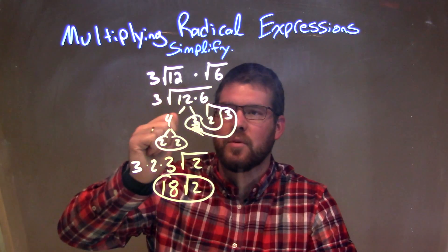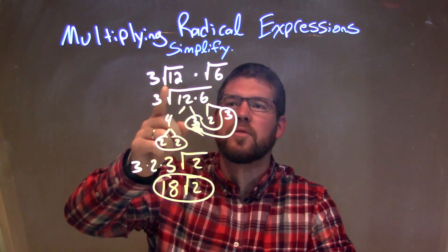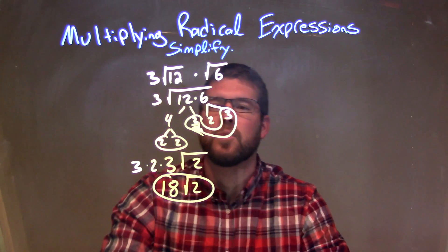So let's recap. We're given 3 times the square root of 12 times the square root of 6. Since they're both square roots and being multiplied, I can combine them together under one big square root.